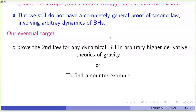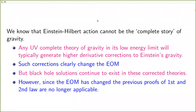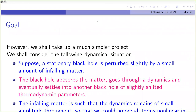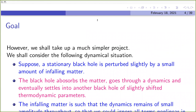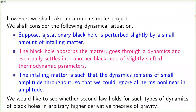Our eventual target is to prove the second law for any dynamical black hole in arbitrary higher derivative theories of gravity, or to find a counterexample — it is also possible that only certain corrections are allowed by a generic UV completion, and only there can we expect the second law to hold. That is the final target of this full project. At the moment, however, we take up a much simpler project.